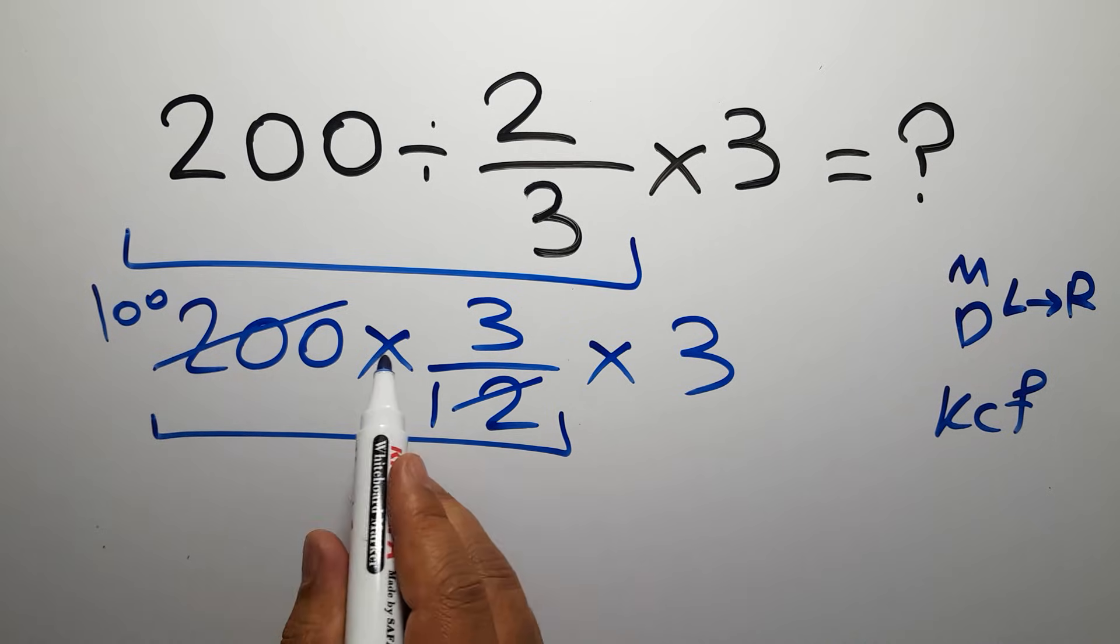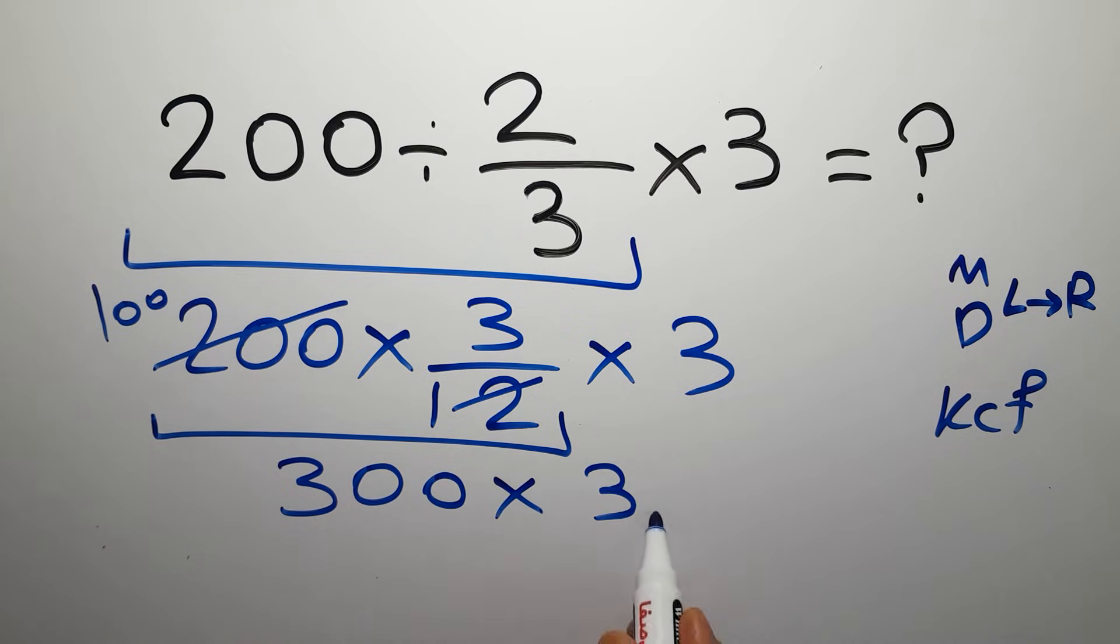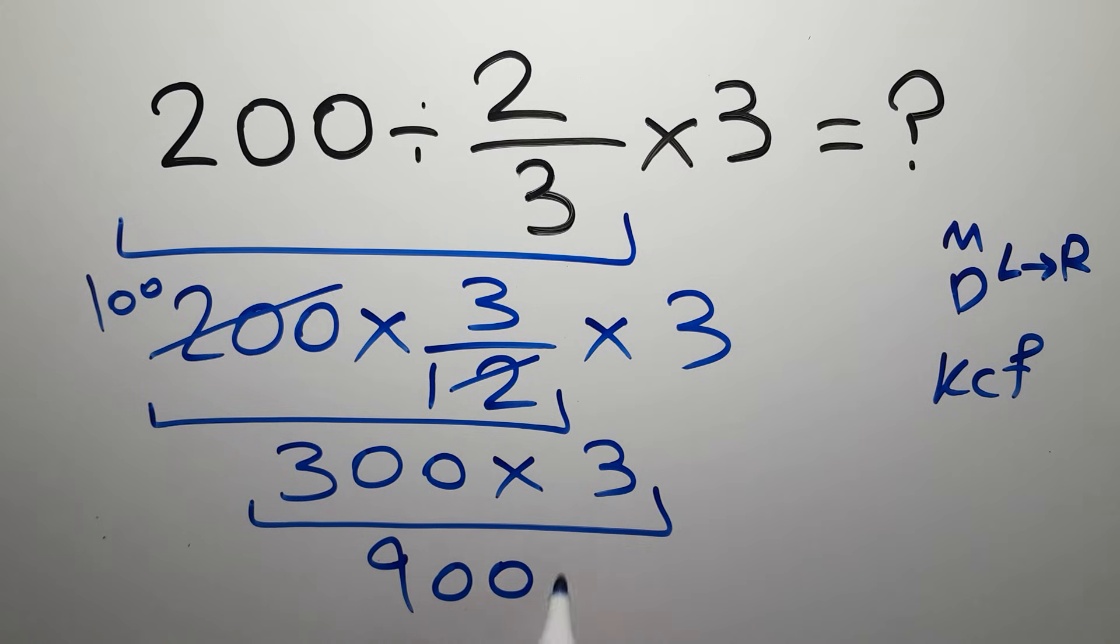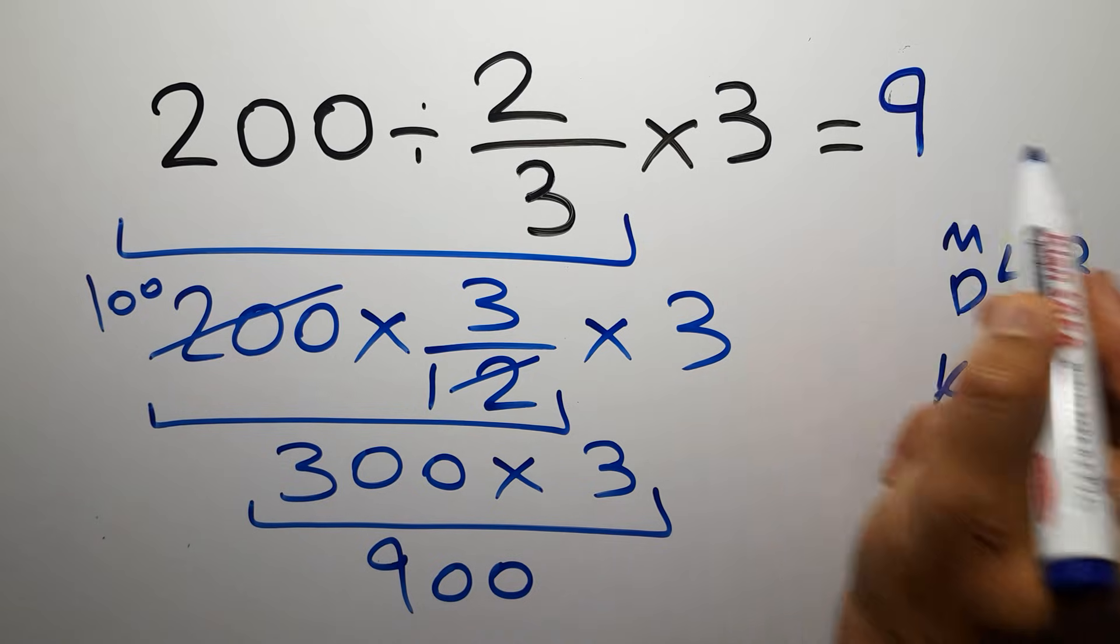100 times 3 gives us 300, so 300 times 3 equals 900. Therefore our final answer to this problem is 900. The correct answer is 900.